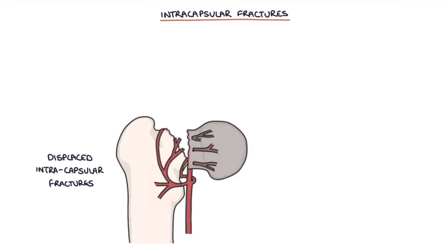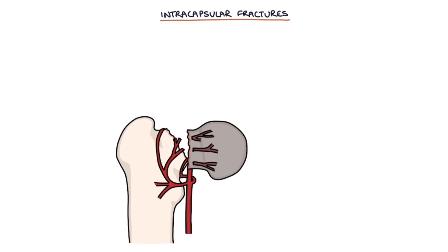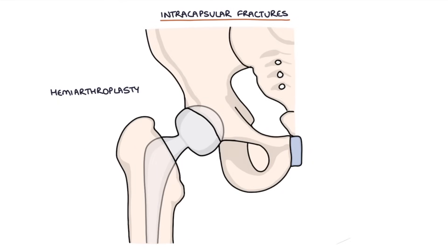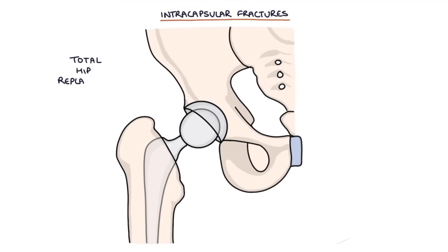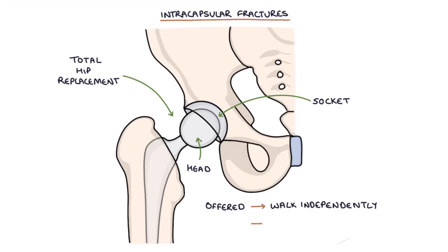Displaced intracapsular fractures — grade 3 or 4 — disrupt the blood supply to the head of the femur, so the femoral head needs to be removed and replaced. Hemiarthroplasty involves replacing the head of the femur but leaving the acetabulum in place; cement holds the stem of the prosthesis in the shaft of the femur, and it is generally offered to patients with limited mobility or significant comorbidities. Total hip replacement involves replacing both the head of the femur and the socket, and is generally offered to patients who can walk independently and are fit for surgery.